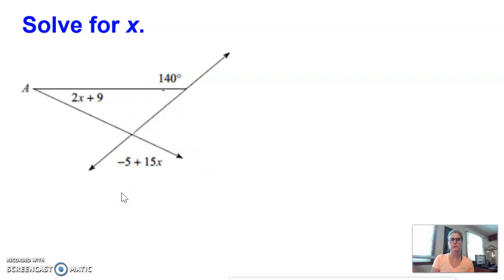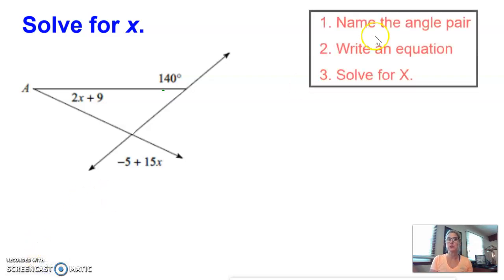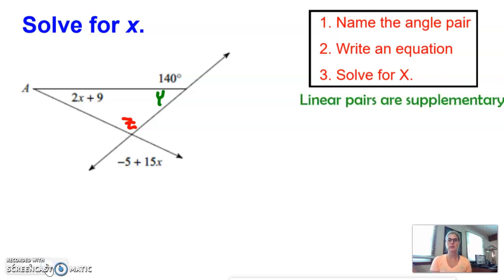So let's do some work here. Remember, here's the steps that we're going to do. We're going to name the angle pair, write an equation, and then solve for X. So let's start with this triangle and let's put in our two angles. I'll put a Y here and a Z here. So now we have three angles in our triangle. What are Y and what are Z? So looking at the Y, let's start there.